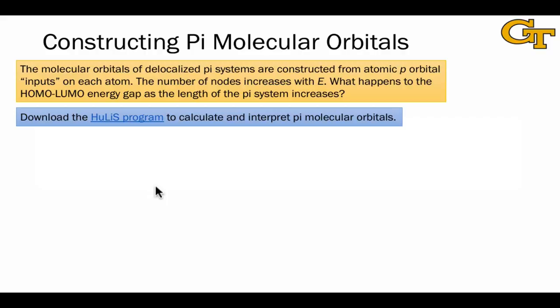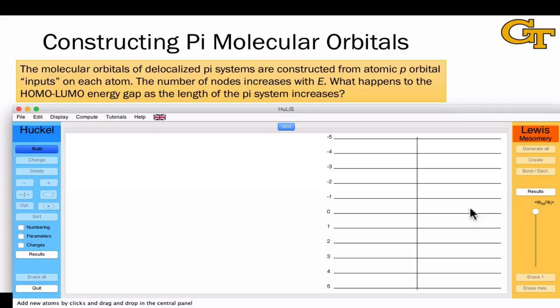The one we're going to look at is called Hulis, H-U-L-I-S. It's called Hulis because it combines the Huckel method to generate pi molecular orbitals with Lewis-Misomeri, which basically means different resonance structures. So this program can both generate important resonance structures of a delocalized pi system and display its molecular orbitals. Let's begin with ethylene, C2H4.